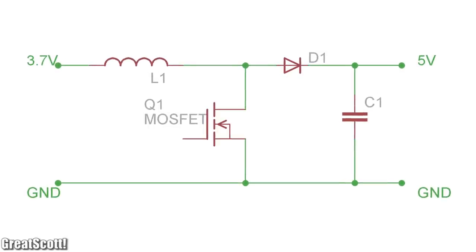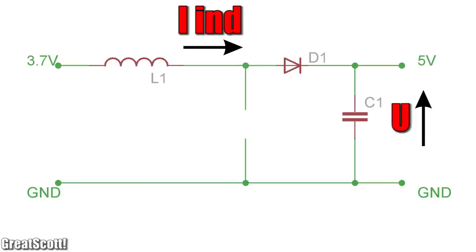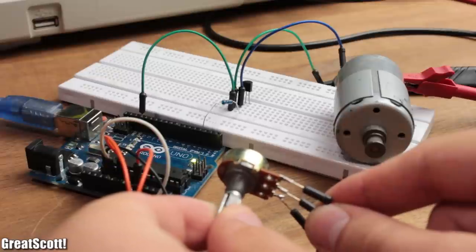Here is the circuit. Firstly, we close this switch to create the magnetic field around our coil. Then we open the switch. Now our coil pumps the energy into our circuit and rises the output voltage at the end. But we also have to be careful.